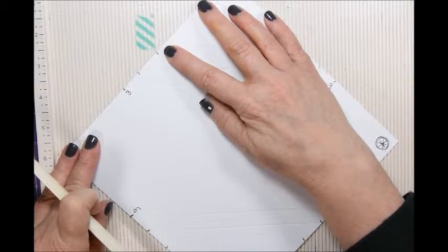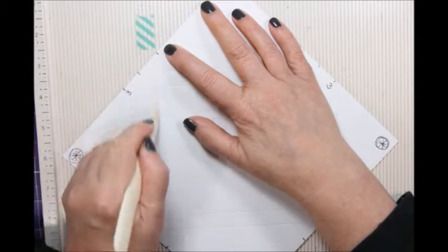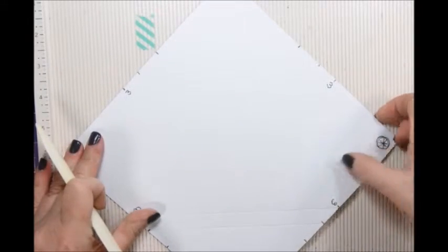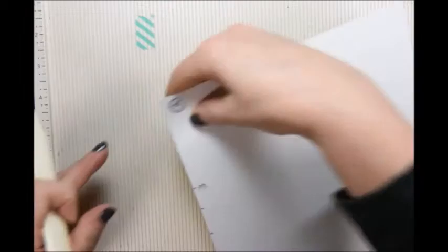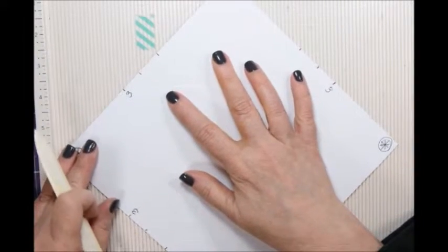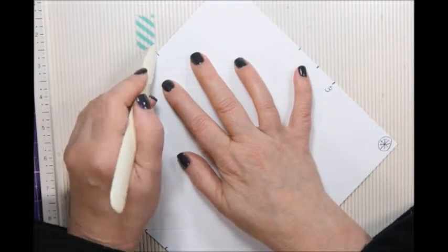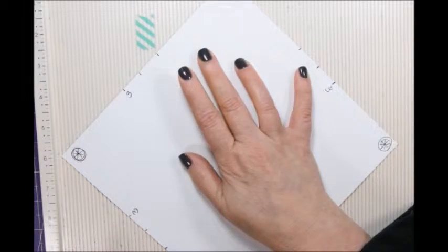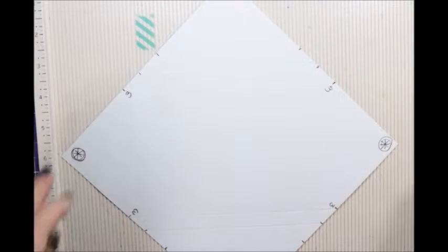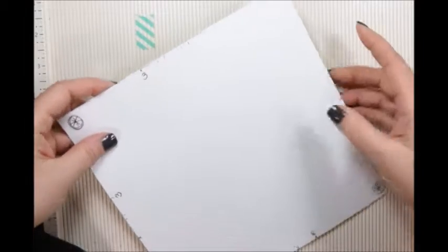So lining up those marks. And then I'm going to turn it and do it on the other corner as well. The four and five eighths marks. Line those up. So now we have most of our scoring done.